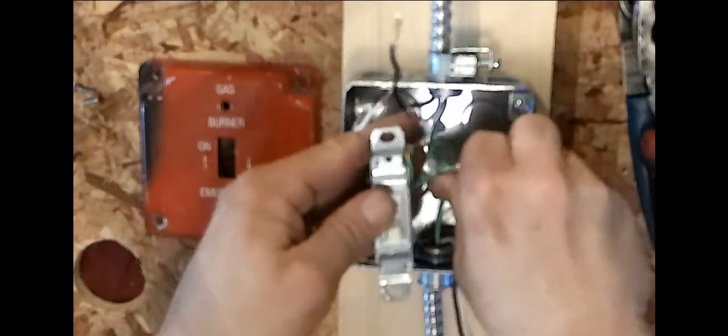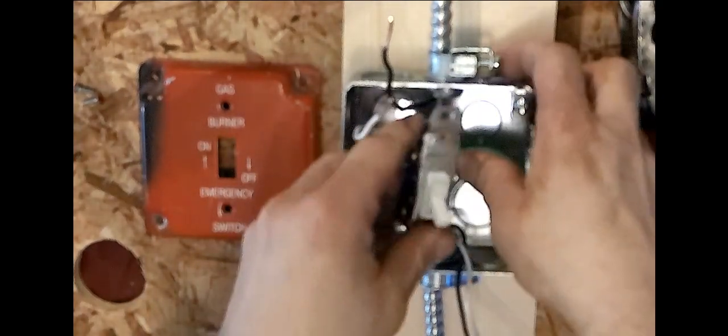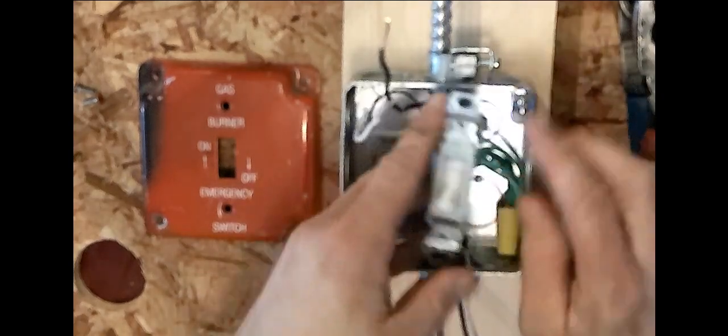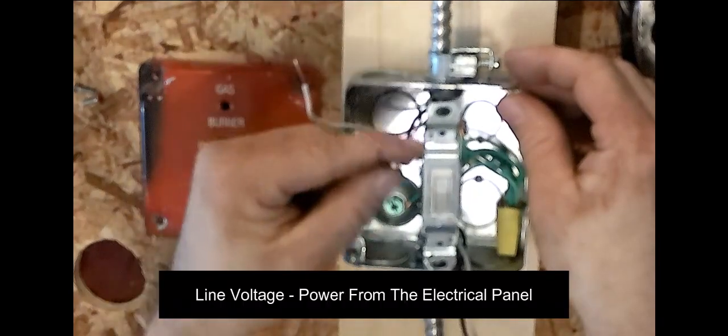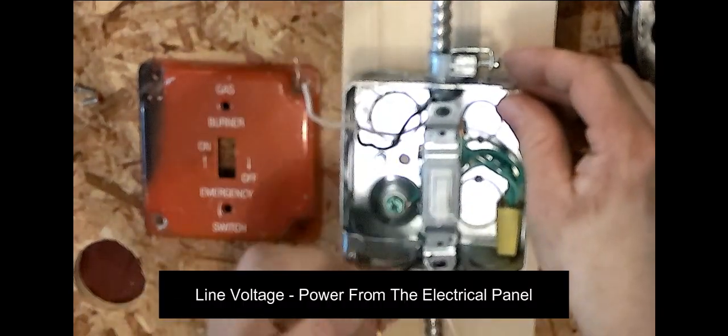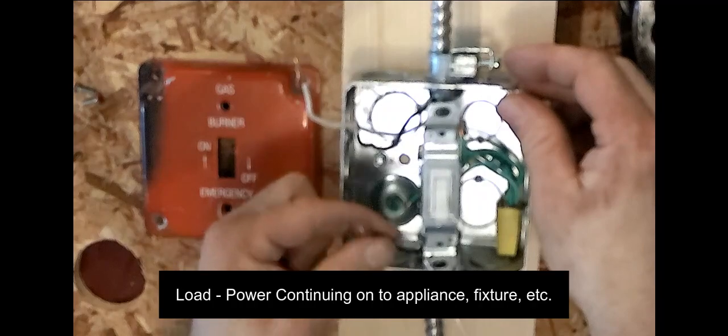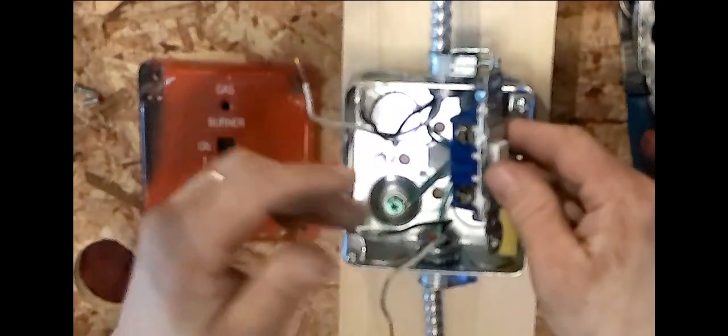So now we have our line voltage coming in and we have our load going out on the black wires. So generally with a single pole switch like this, it really wouldn't matter which black wire goes to which terminal on the side here.